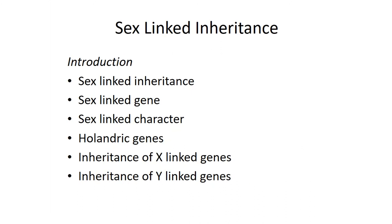We now move to sex-linked inheritance. We have two types of chromosomes — autosomes carrying genes for body characters, and allosomes or sex chromosomes carrying genes for sex characters. When body-character-determining genes are located on one of the sex chromosomes, it is called sex-linked inheritance. Genes controlling body characters located on sex chromosomes are called sex-linked genes. Y-linked genes are called holandric genes.